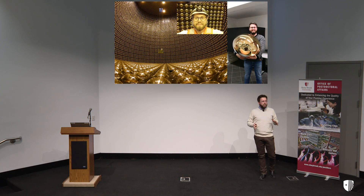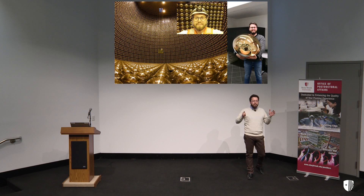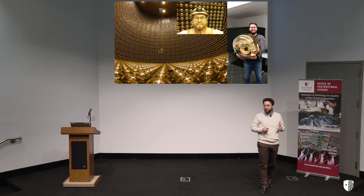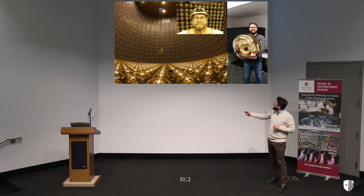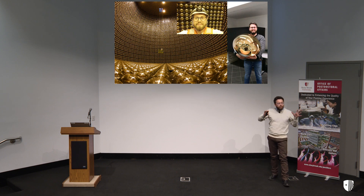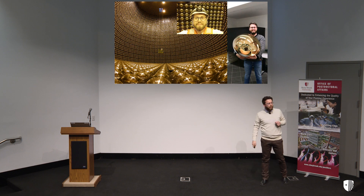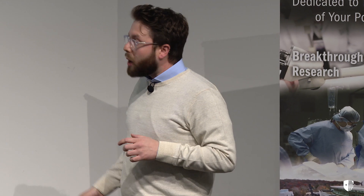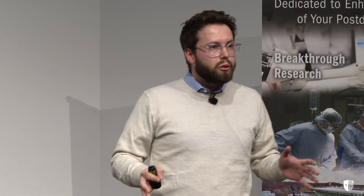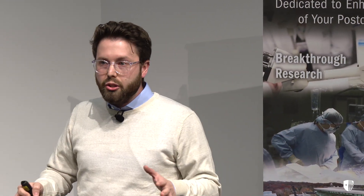Super-Kamiokande is a tank filled with 50 kilotons of ultra-pure water, equipped with 11,000 cameras that take pictures of these neutrinos. The cameras are actually very big — 50 centimeters in diameter. And why does it need to be so big? Because neutrinos are very shy and hard to catch, and we need a very large volume to maximize the probability of detecting them.